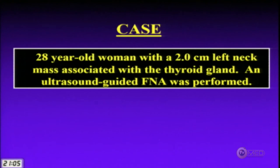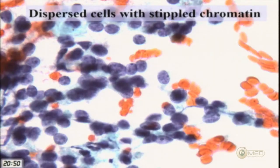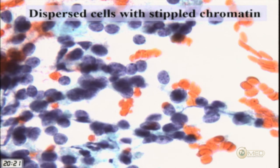The third case is a 28-year-old woman with a 2-centimeter left neck mass associated with the thyroid gland; an ultrasound-guided FNA was performed. The FNA shows dispersed cells, loosely cohesive but mostly single-cell-like pattern. One notable feature is a stippled chromatin pattern — also called salt-and-pepper chromatin — giving a neuroendocrine look.